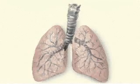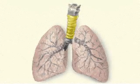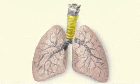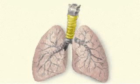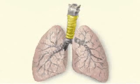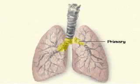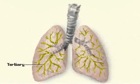Air enters the lungs through a large tube known as the trachea, which is supported by concentric rings of cartilage connected to each other by annular ligaments. The trachea splits into a right and left primary bronchus, and from there each primary bronchus subdivides into secondary and tertiary bronchi.